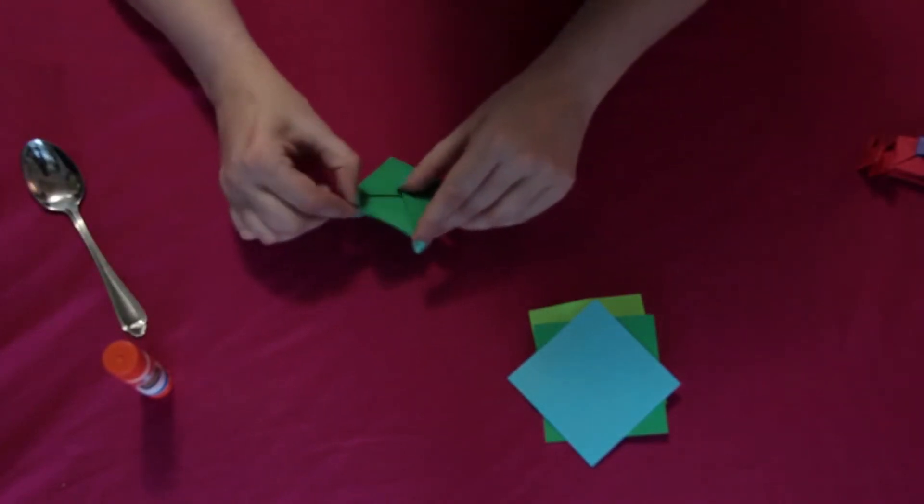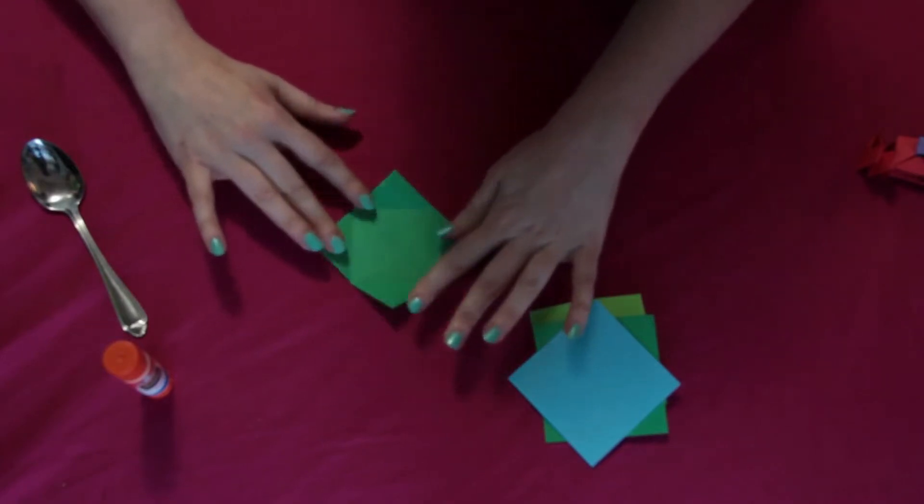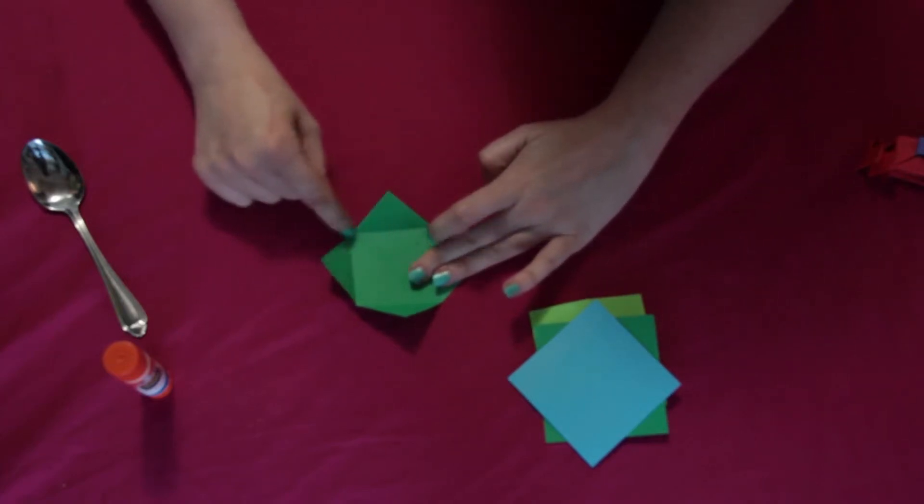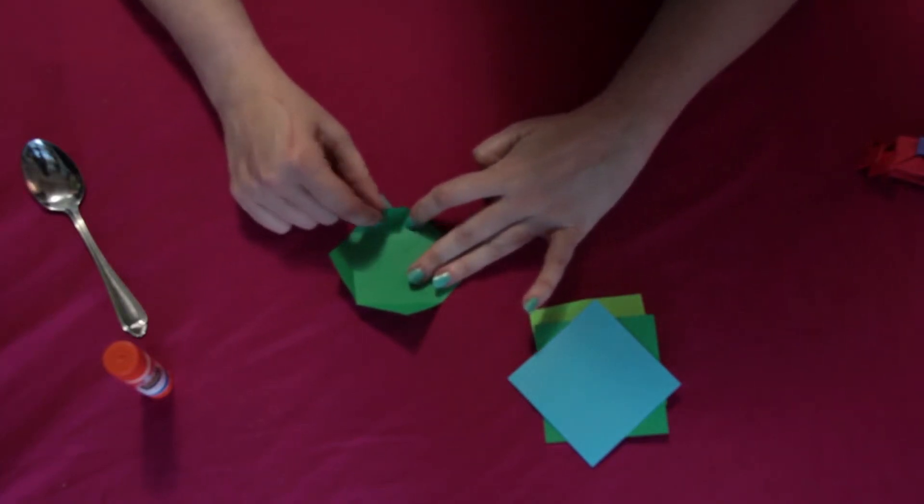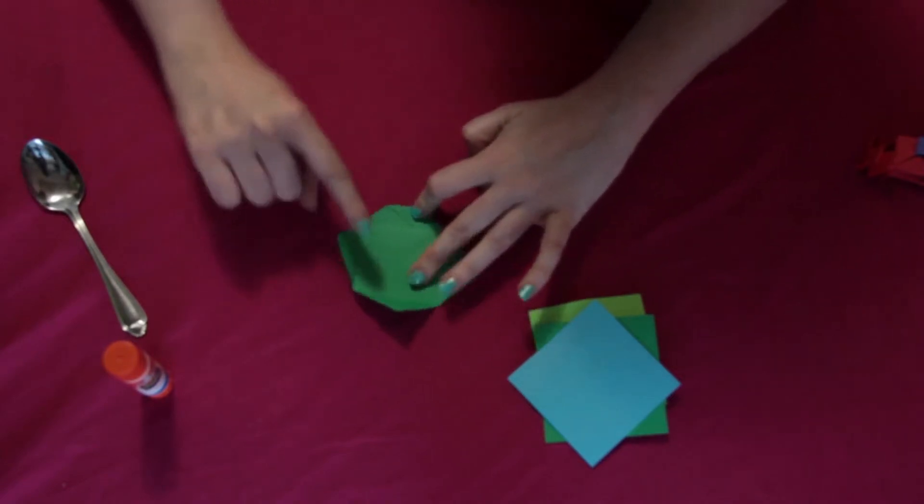So now that we have that we're going to open up all four of those flaps again. And then we're just going to fold each of these points in to touch the square line here. So just halfway just like that.